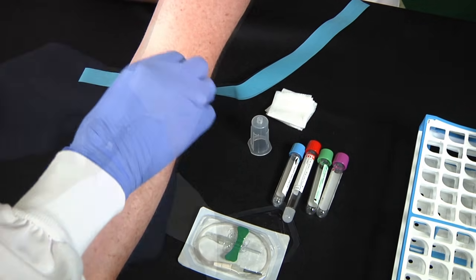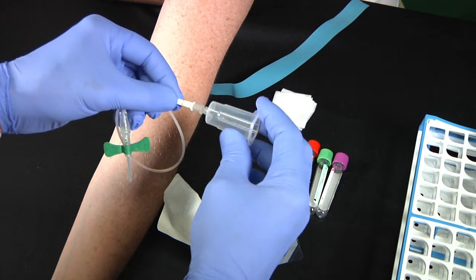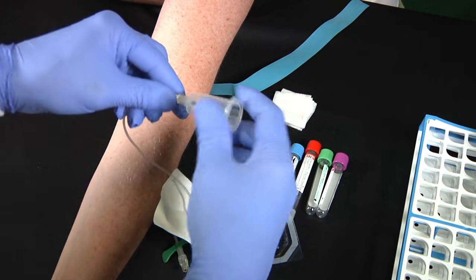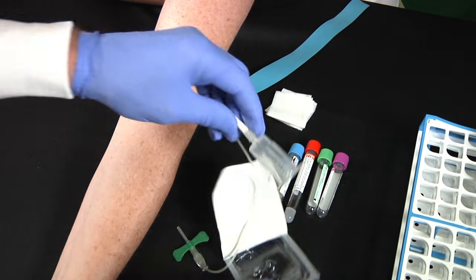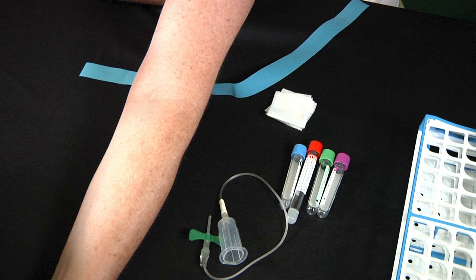While it's doing that, you're assembling the device by attaching either a tube holder or a syringe to the back end, depending on what you've determined to be most successful. You'll probably use a tube holder most of the time unless you think the vein is too fragile to sustain all of that vacuum without collapsing, in which case you'll use a syringe.